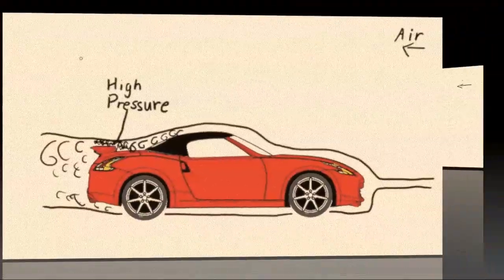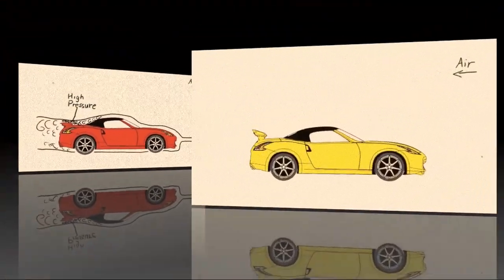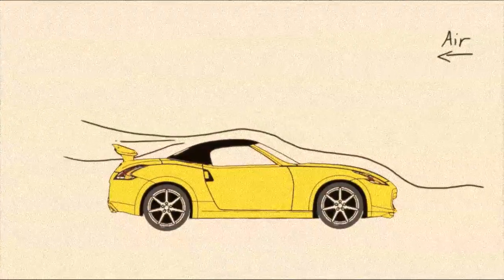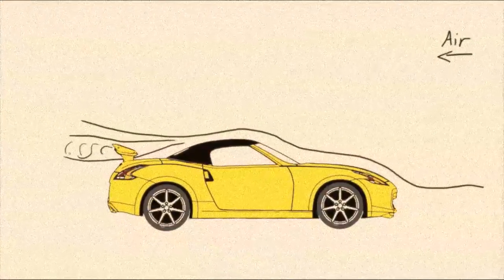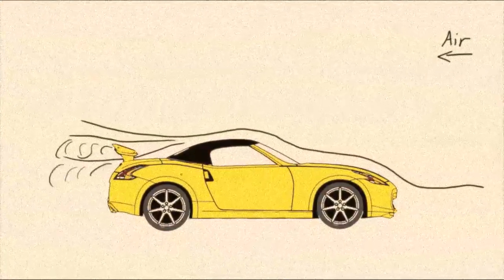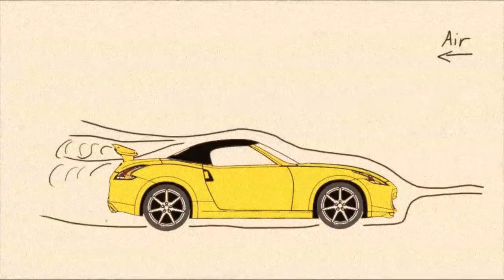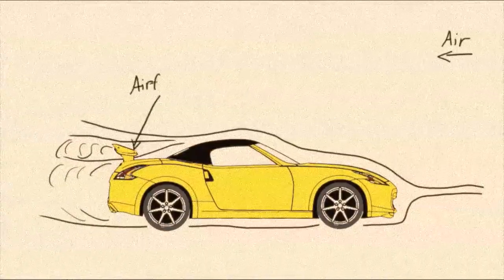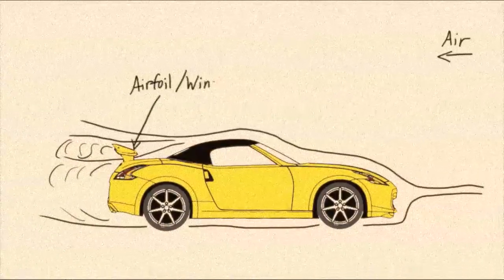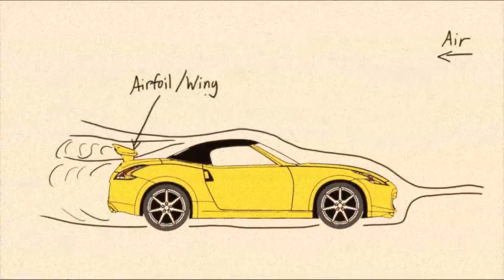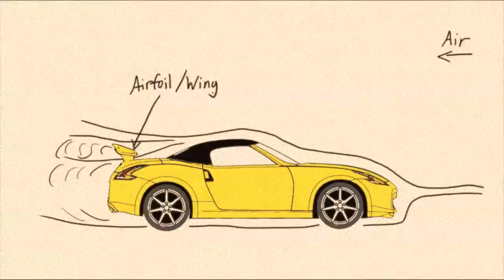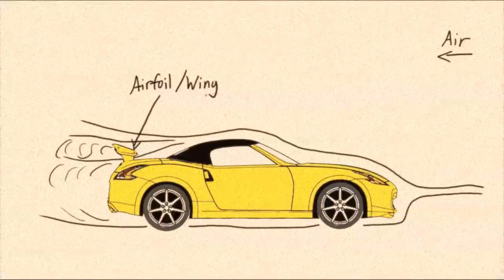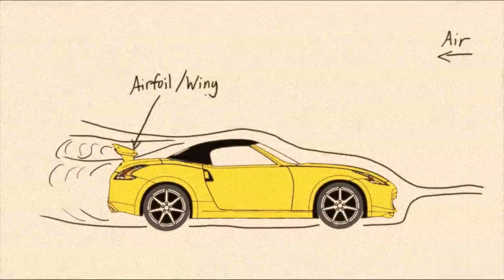Instead of using spoilers, we can use an airfoil that decreases lift without increasing drag. Air flows around the car, but this time a localized pressure difference at the airfoil creates a downforce that doesn't block the airflow like the spoiler. Lift is decreased without significantly increasing drag.